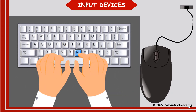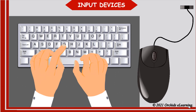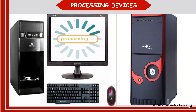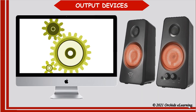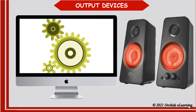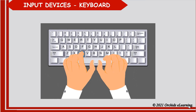The devices that are used to enter data into the computer are called input devices. The input data is processed by a processing device, where raw data is converted into meaningful information. The devices that are used to show the result after processing are called output devices.